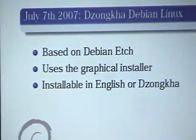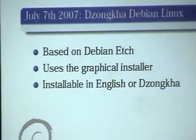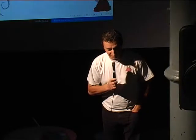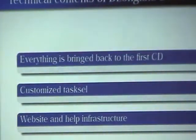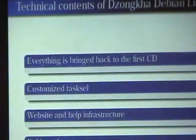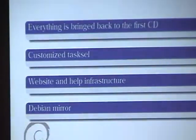Dzongkha Debian Linux will be entirely based on Debian Etch. They used the standard graphical installer, just customized the logo and so on. I wanted to set up a demo machine, but these machines don't boot the Debian graphical installer, so I couldn't. Dzongkha Debian Linux is installable in both English and Dzongkha. On Dzongkha Debian Linux, everything is on one CD. It's not, as far as I know, a live CD. There is a customized task set, and they have also set up — which will be launched very soon — a new team with resources.